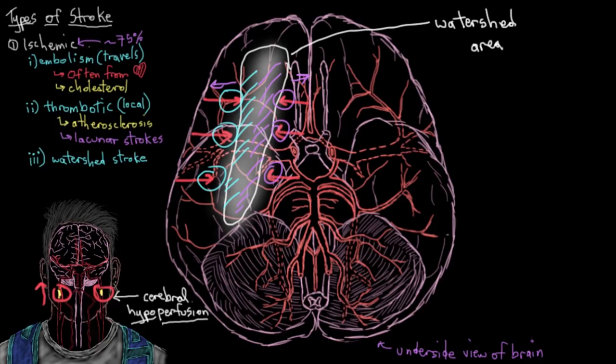So these are the three main causes of ischemic stroke: embolism, thrombosis, and watershed strokes caused by hypoperfusion.